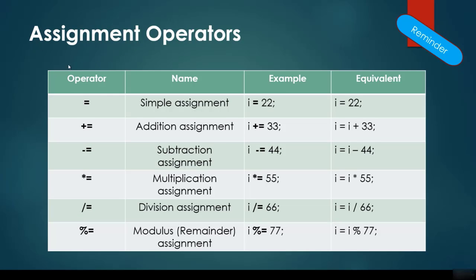Assignment operators: we have the equals sign to assign a value to a variable — for example, assigning 22 to variable i. We have plus-equals, which increments i by a given value, equivalent to i = i + 33. The minus-equals operator subtracts from a variable, and multiplication-equals means i = i * 55.